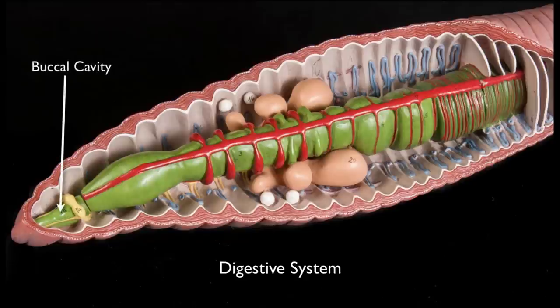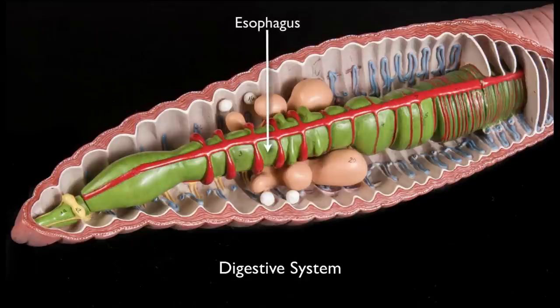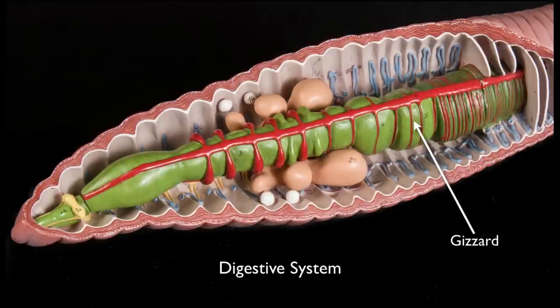The mouth is not visible in this view, so the first structure is the buccal cavity — a tube connecting the opening of the mouth with the next structure, the pharynx. The pharynx is a muscular tube that can expand to draw food into its interior space, much like you use your mouth to suck in a milkshake. Food is transported through the esophagus by muscular contractions to the crop, which serves as temporary storage. The gizzard has a thick muscular wall that grinds food into smaller particles, since earthworms take in a lot of sand and dirt. You could regard this as mechanical digestion, a task you accomplish with your teeth.